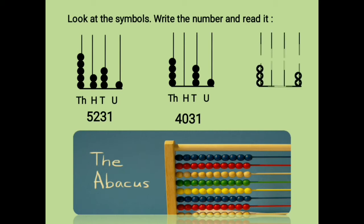Let us see one more example. In the units place there are two beads. In the hundreds and tens place there are no beads, so it will be 0 over there. And in the thousands place there are three beads. So the answer will be 3002.